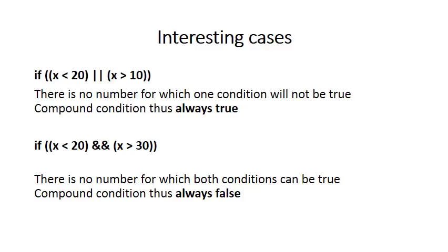The same applies to the second if statement: if x < 20 and x > 30. This is just the opposite — you cannot give a number that is less than 20 as well as greater than 30. So it is impossible to have a value for x that makes this compound condition true. This compound condition is always false and thus does not really make sense to use.